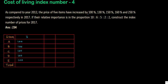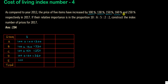The first item is increased by 100%, so 100 plus 100 gives us 200. The second item increases by 130%, so 100 plus 130 gives 230. The third item increases by 150%, giving 250. The fourth item increases by 160%, giving 260. The last item increases by 250%, giving 350.